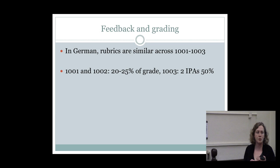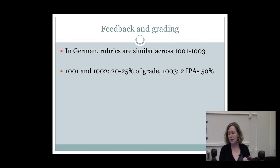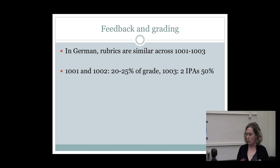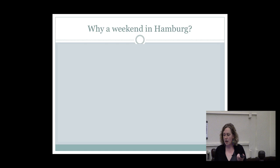Looking overall at the rubrics we use in German: the other rubrics were taken and tweaked from the actual IPA handbook, and the final essay rubric is a little different because it's based on something we've been using for essays for a while. They look pretty similar across German 1001 through 1003. In 1001, 1002, and 1022 we have one IPA per semester, worth roughly 20 to 25 percent of the grade. In German 1003, there are two IPAs totaling 50 percent of the grade.